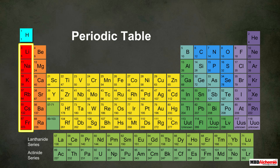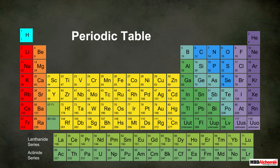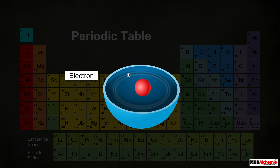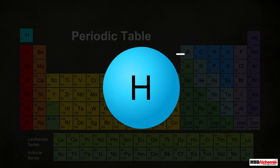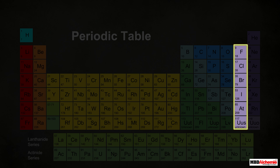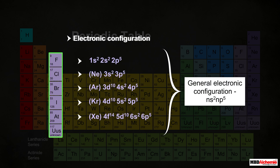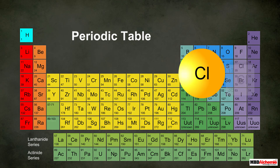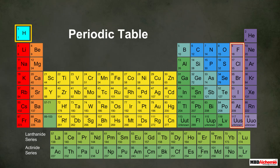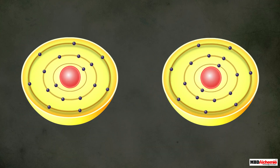Let us check another possibility of positioning hydrogen in the periodic table. Its configuration is 1s¹, so it has one electron less than the stable noble gas configuration. Therefore, it can gain one electron to form a hydride ion. This property is similar to the halogens, which have the electronic configuration ns²np⁵ and thus have a tendency to gain one electron to form halide ions.